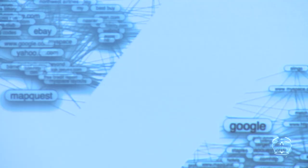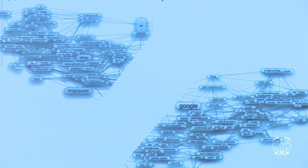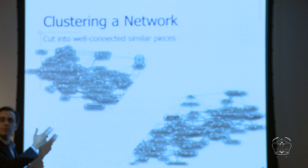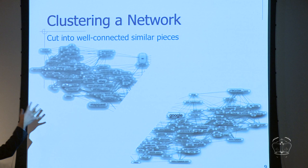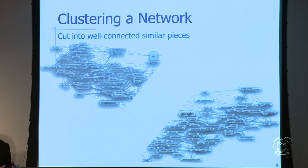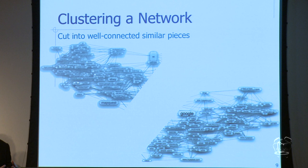Another thing we like to do with networks is break them into smaller pieces — that's called clustering. We find the weakest links in the network, cut it up with a pair of scissors, and say here are two large clusters. Maybe these clusters are certain types of websites and those are other types. We have another algorithm, just like the MVE algorithm for visualizing, that color-codes and breaks the network into pieces.